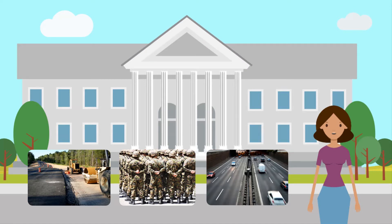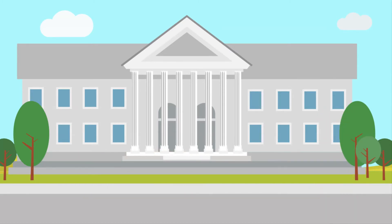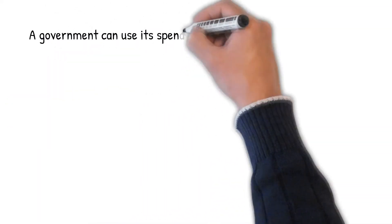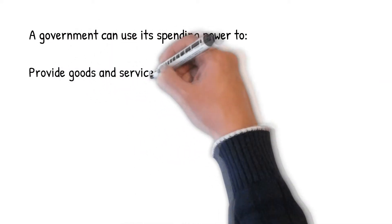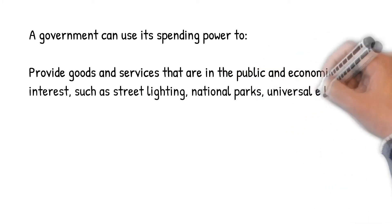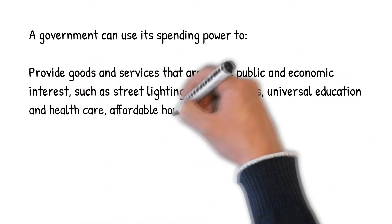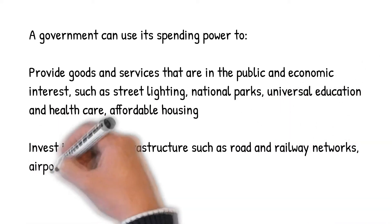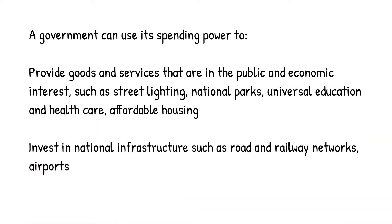It must be noted that public expenditure is likely to benefit many private sector firms. So why do governments spend money? A government can use its spending power to provide goods and services that are in the public and economic interest — such as street lighting, national parks, universal education and healthcare, and affordable housing — and to invest in national infrastructure such as road and railway networks and airports.